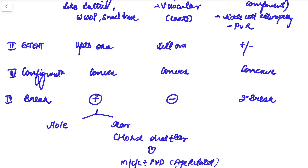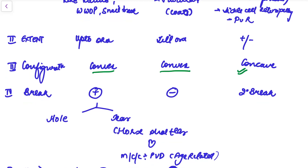The third point is the configuration. In rhegmatogenous and exudative retinal detachment, there is fluid present between the neurosensory retina and the RPE, so the configuration in these two will be convex. But in tractional retinal detachment, there is fibrous proliferation, so the configuration will be concave — like a tent. The fibrous proliferation stretches and pulls the retina, forming a tent-like, concave configuration in tractional retinal detachment.